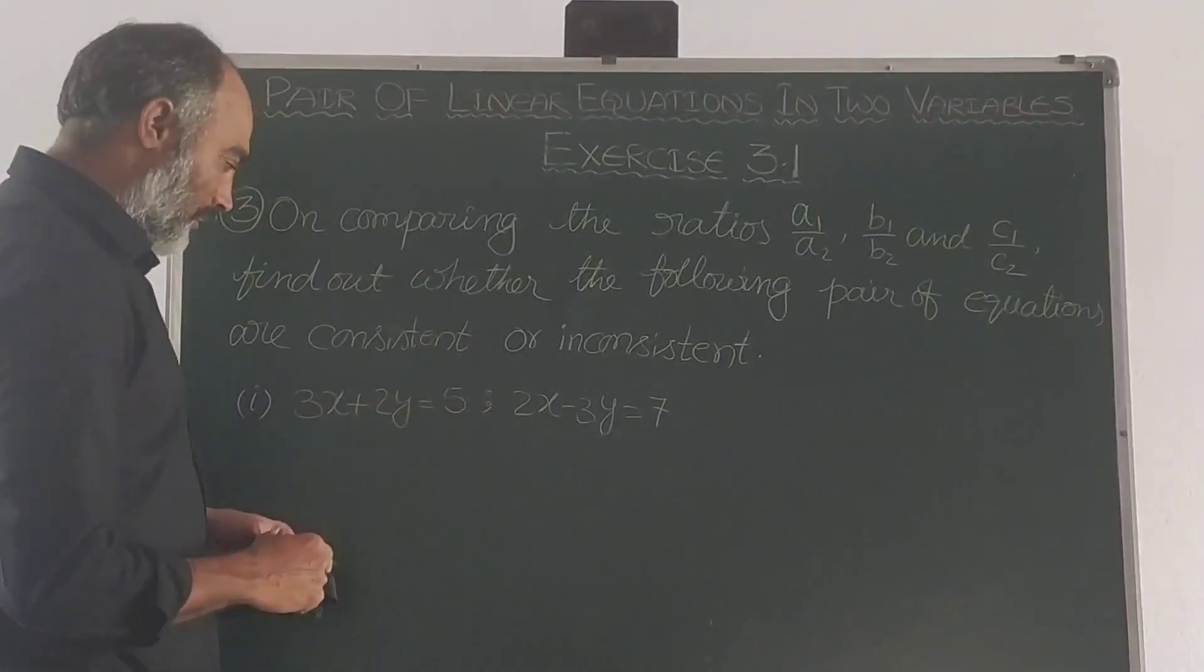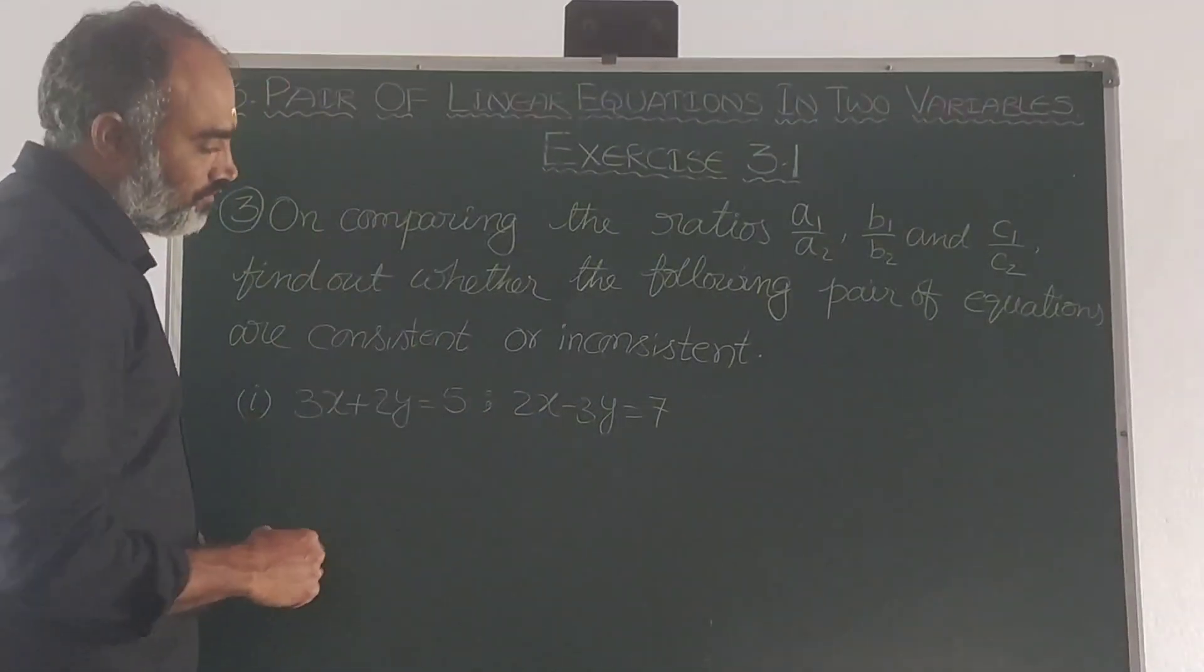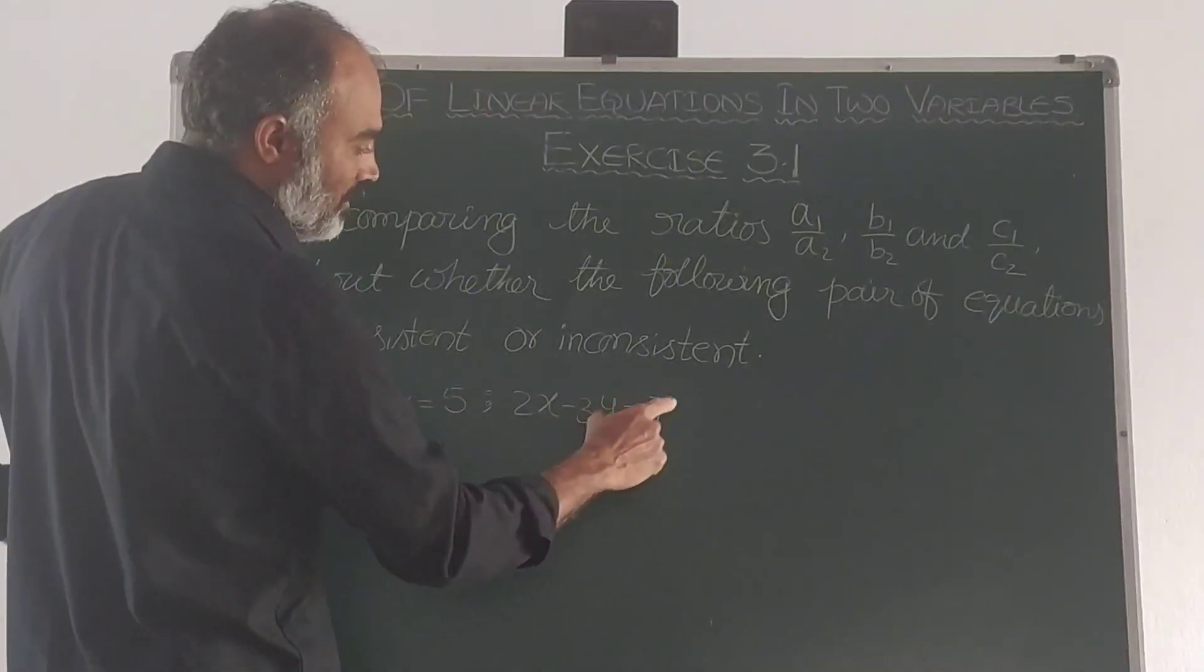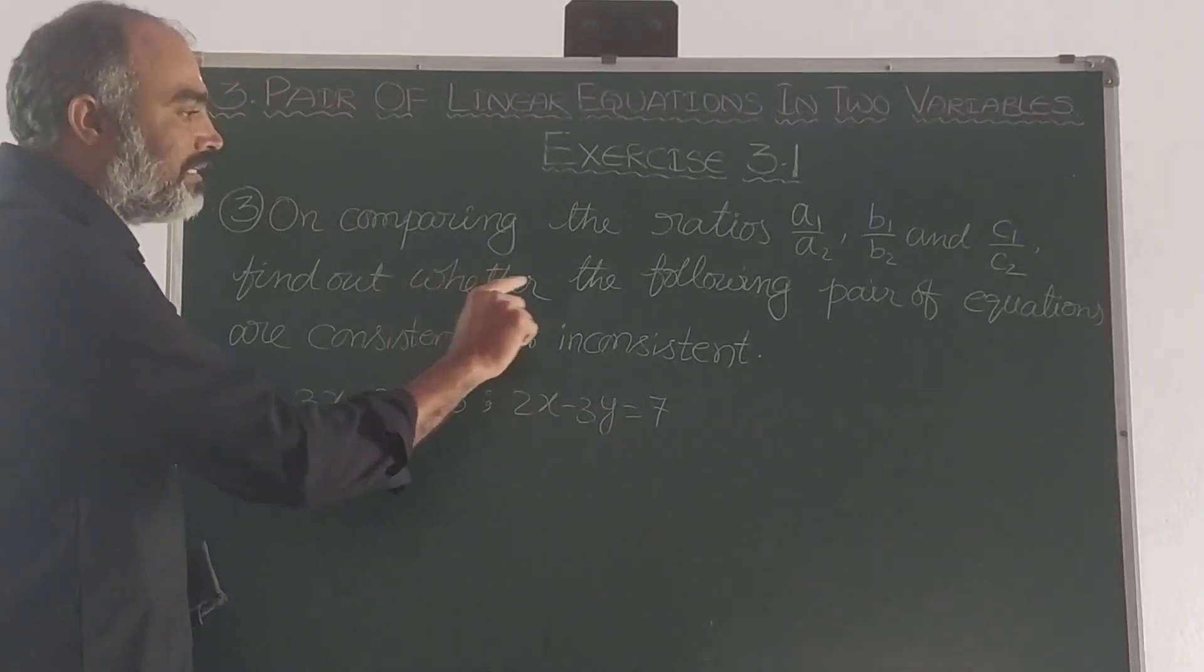The pair of equations are: 3x plus 2y equal to 5, and 2x minus 3y equal to 7. These two need to be checked for consistent and inconsistent.